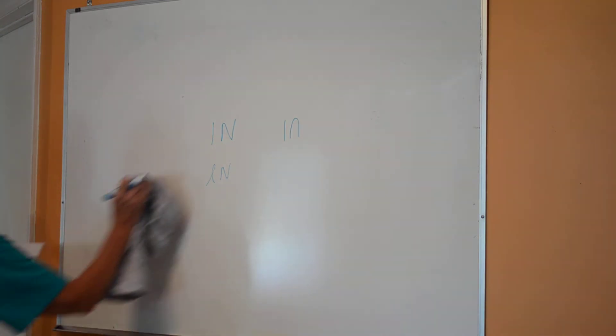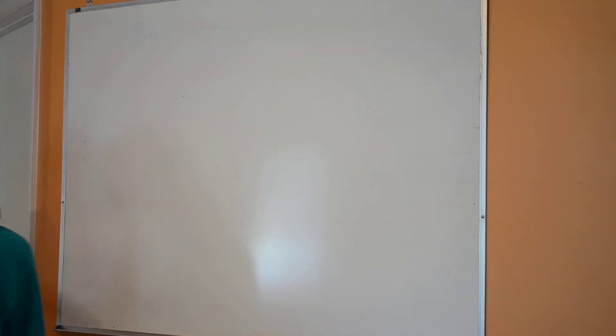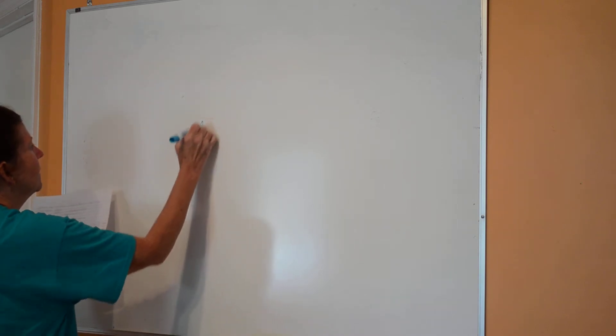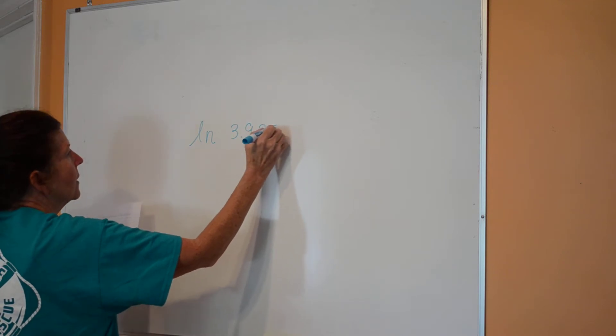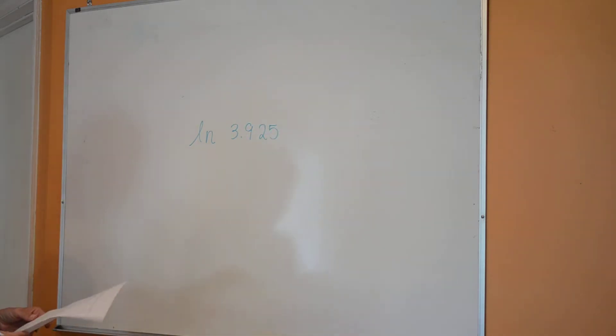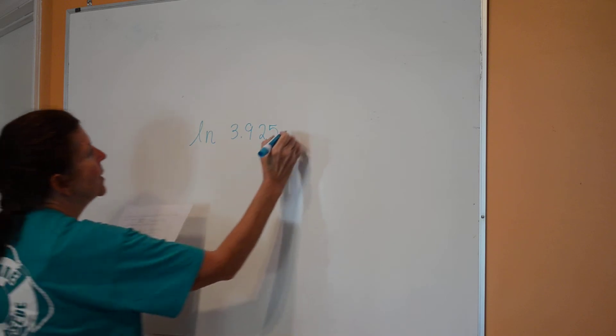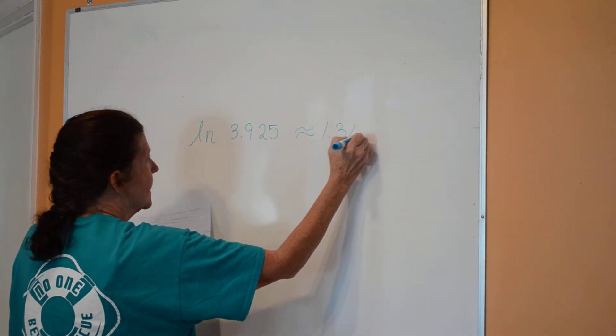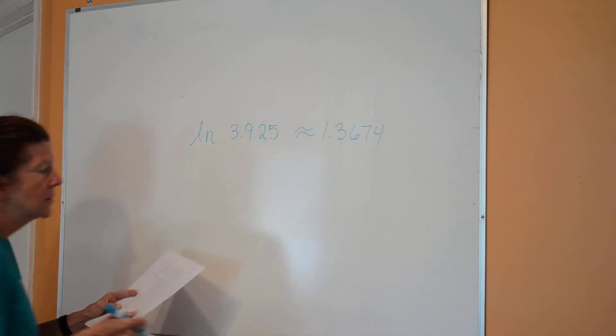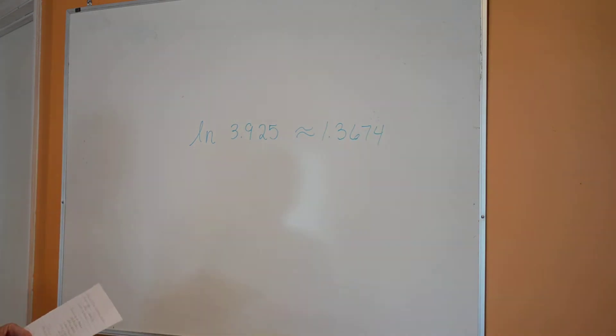All right, so pick up your calculator again and see if you can find the natural log of 3.925. Go ahead and do that on your calculator. It should equal approximately 1.3674, and you round into four places after the decimal.